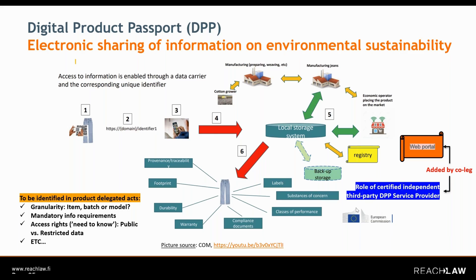Also what has been added by the co-legislators is the role of a so-called certified independent third-party DPP service provider — a service provider who would store, for example, a backup copy of the DPP, which may be useful in case the economic operator is going out of business.